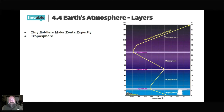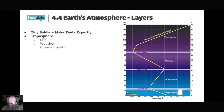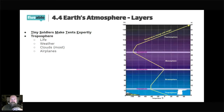The troposphere is where you get all your clouds. Even mountains are within the troposphere. Most commercial jets can go even higher — up into the stratosphere. As you climb up a mountain it gets colder and colder — the top of Mount Everest is way colder than the bottom — so as we climb up in the troposphere it gets colder.